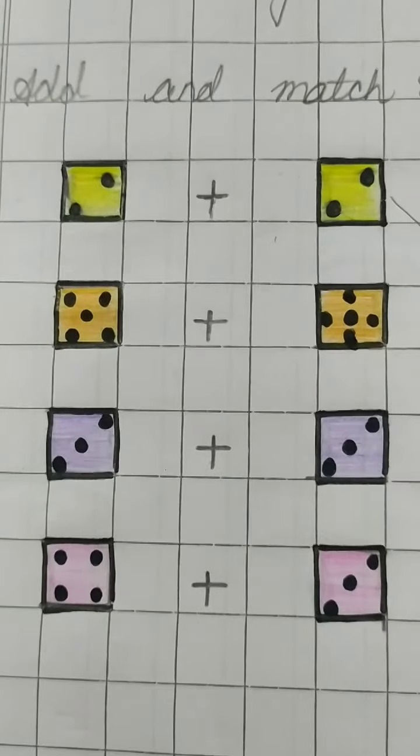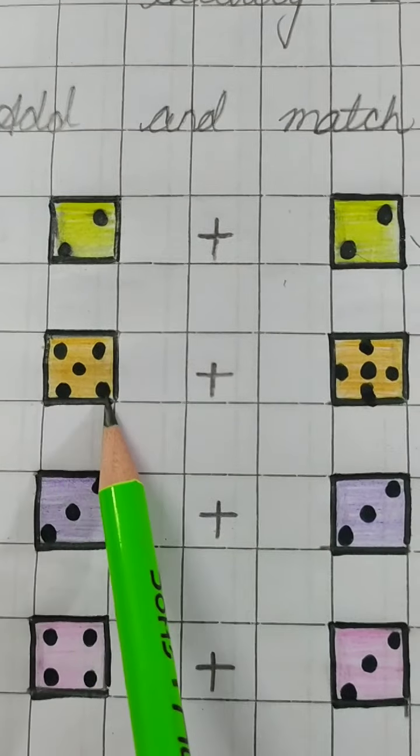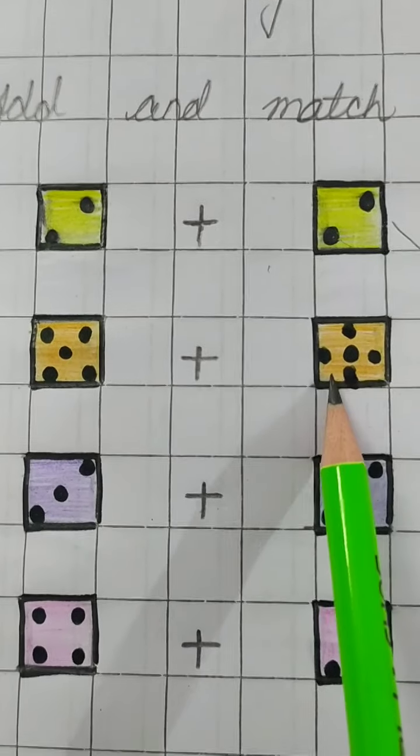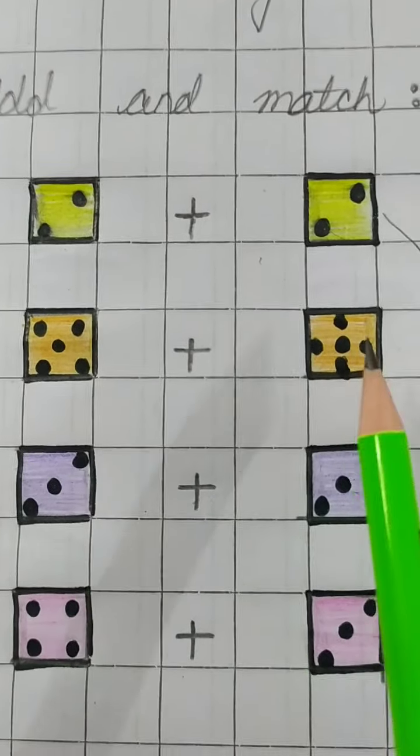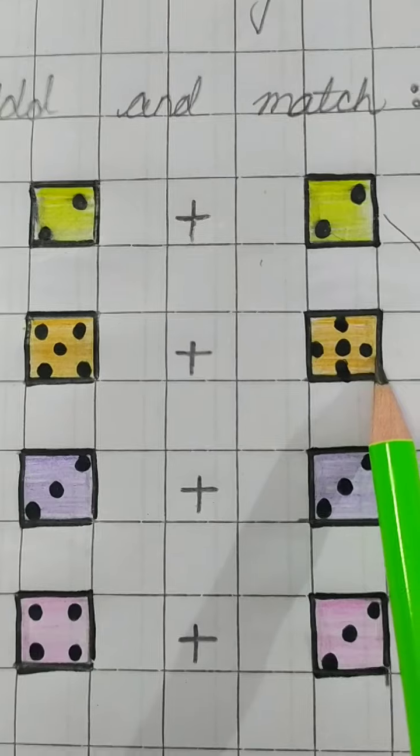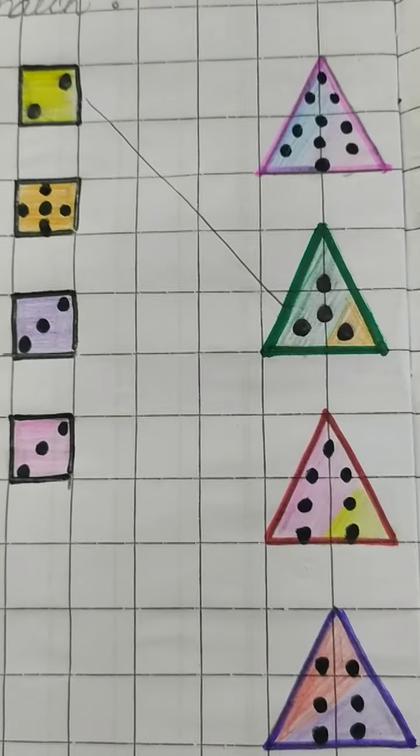Now we'll see the second question. In the first box there are 1, 2, 3, 4, 5 dots. Next, mein bhi kuch dots hain. Dono ko saat mein count kerna hain. So, 5, then 6, 7, 8, 9, 10. Ab hume dekhna hain, ki kis triangle mein 10 dots hain.